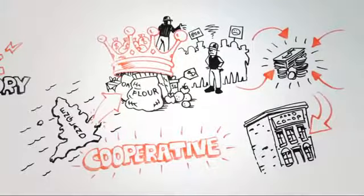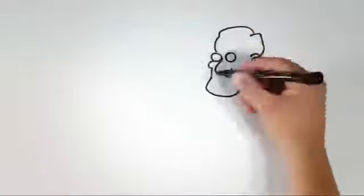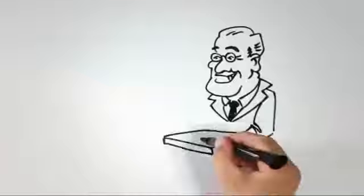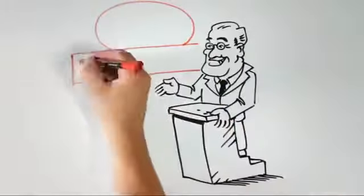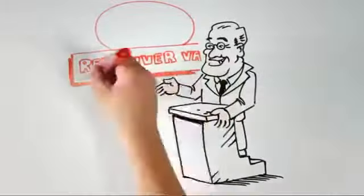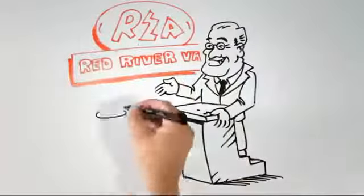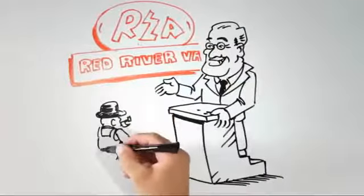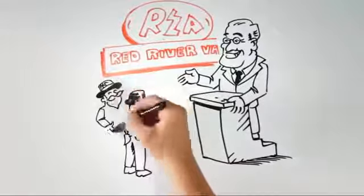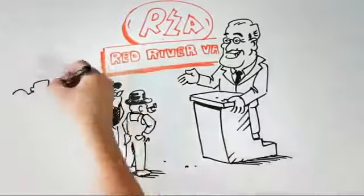The idea caught on here in the US. President Roosevelt gave electric cooperatives a jump start with the founding of the Rural Electrification Administration, the REA, telling American farmers and ranchers, 'If you want electricity, you can do it yourselves.'